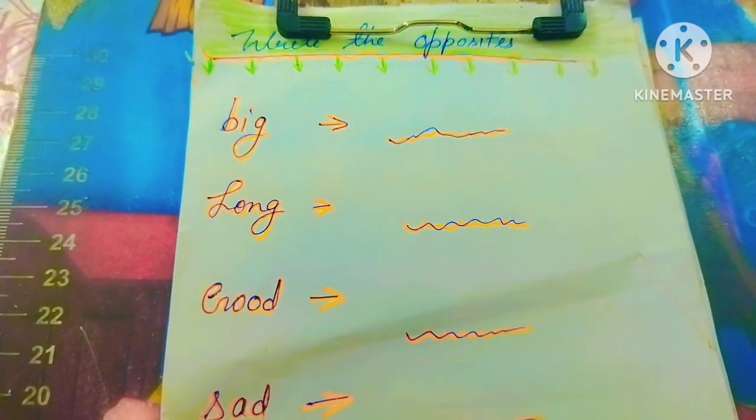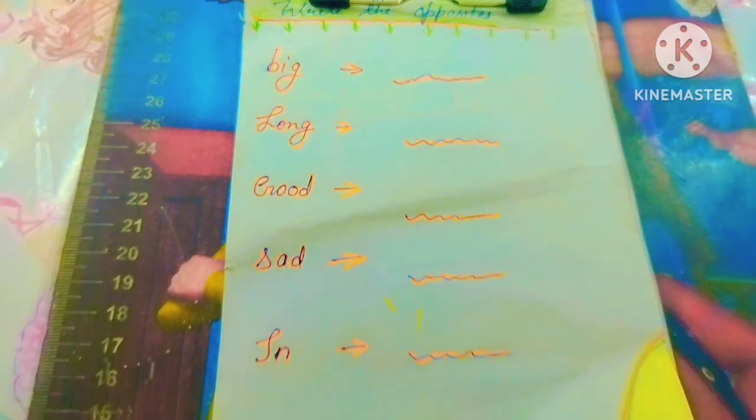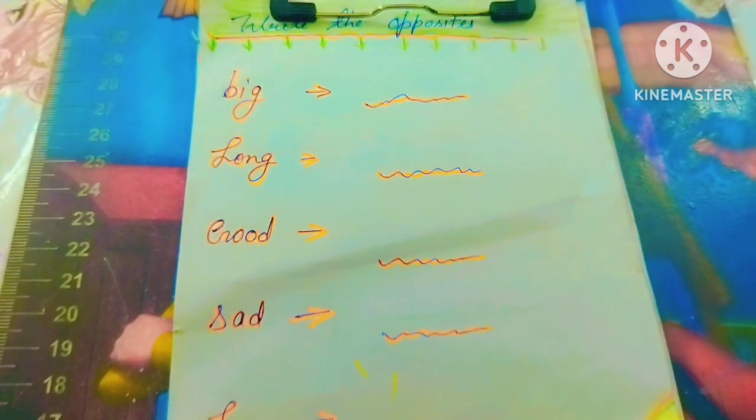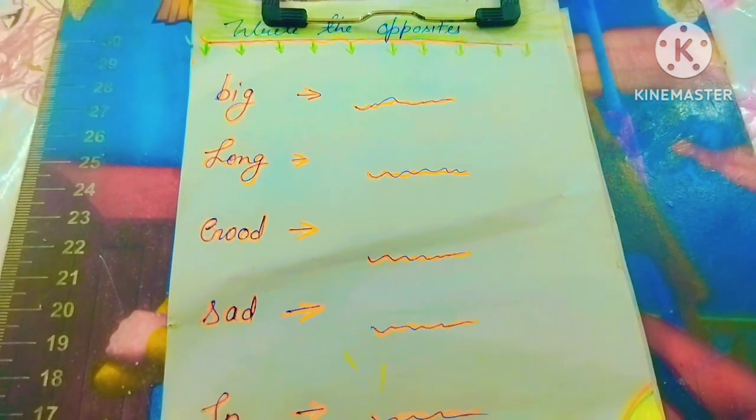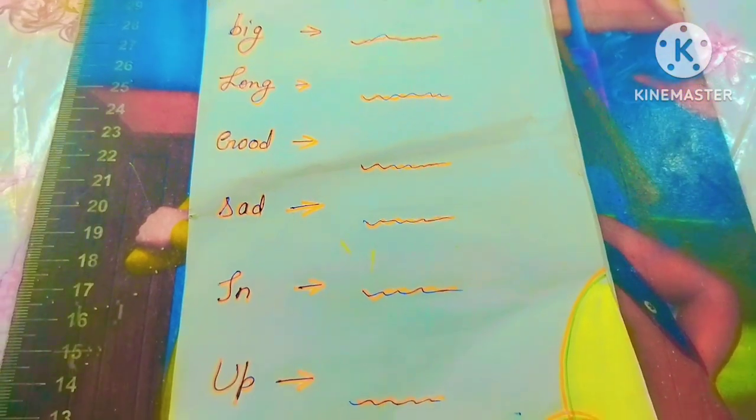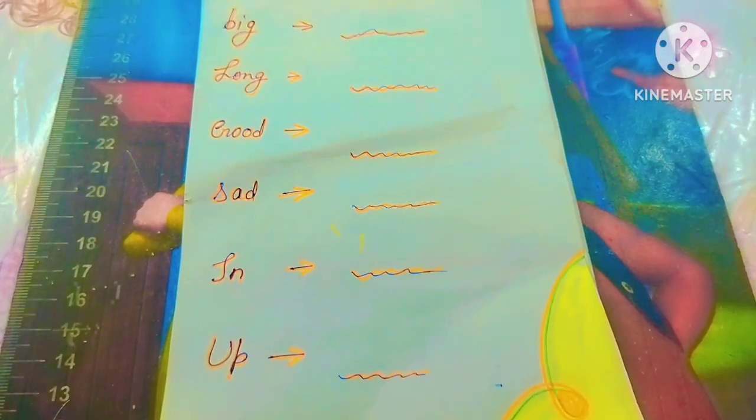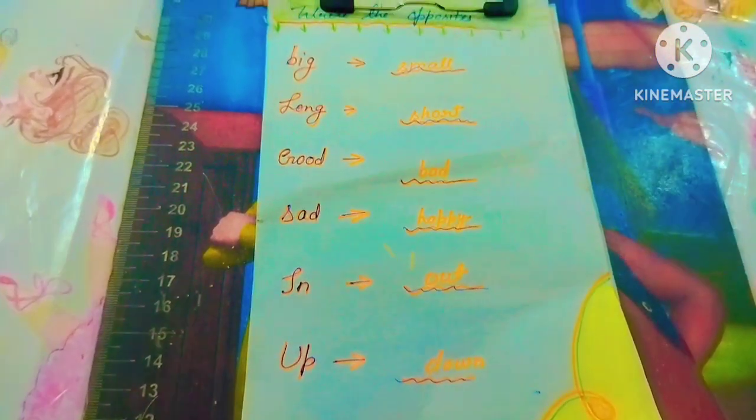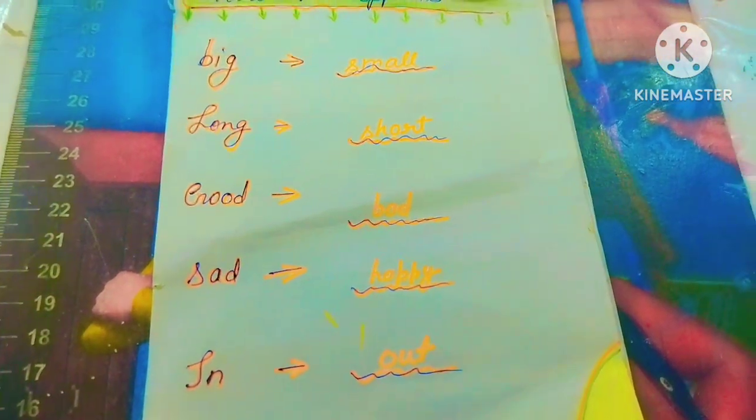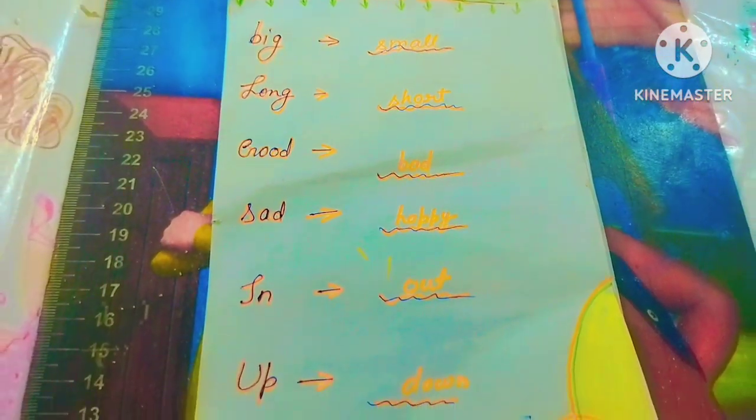Next we have to write the opposites. As you can see here, what are the words you have to write: Big or Small, Long or Short, Good or Bad, Sad or Happy, In or Out, Up or Down. So you can practice this way. Write opposites.